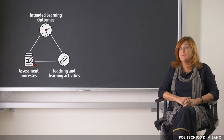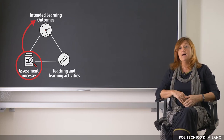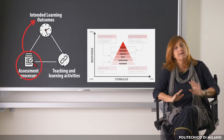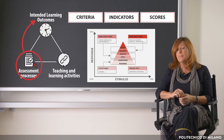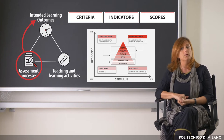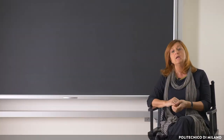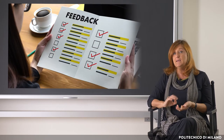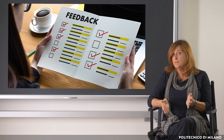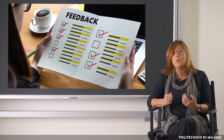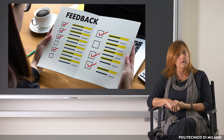Once we have created an effective assessment process in line with the intended learning outcomes, after having chosen the most appropriate test to observe the student's performance and after identifying criteria, indicators and scores, another important thing we should not ignore is feedback. That is what comes back to the students after the assessment. The quality of the feedback is a key element of the learning process, both when we are talking about formative assessment, which happens daily, and summative assessment, where we will provide feedback on the level of performance that students have achieved in relation to the intended learning outcomes.